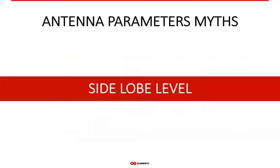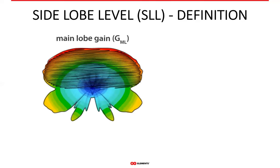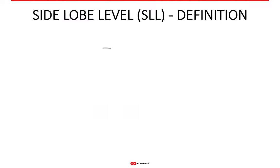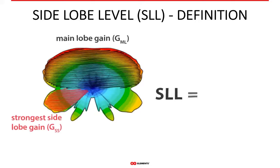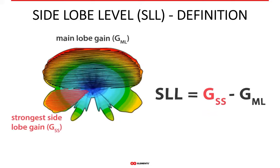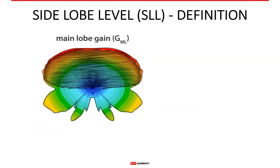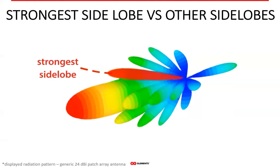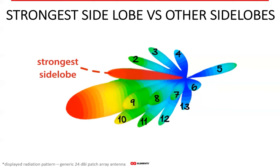Another parameter worth mentioning is side lobe level. In practical life, it is similar to front-to-back ratio, unfortunately. Side lobe level is the difference between the gain of the strongest side lobe and the main lobe. It is more useful than front-to-back ratio because it at least points out the strongest side lobe, which says something about antenna performance in high noise areas. If side lobe level is high, the strongest side lobe is close to having the same gain as the main lobe, making it a very poor antenna for WISP networks. However, side lobe level is defined by the strongest side lobe — only one out of many — and at a single frequency.